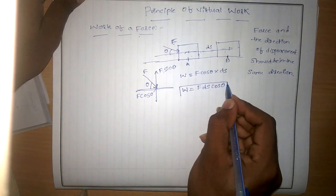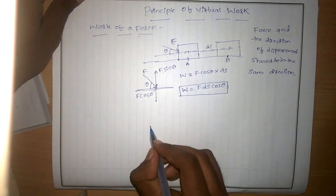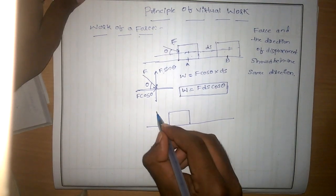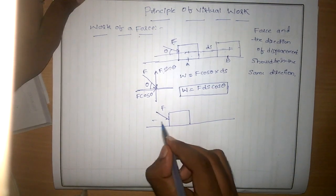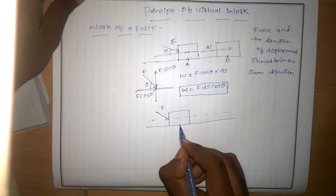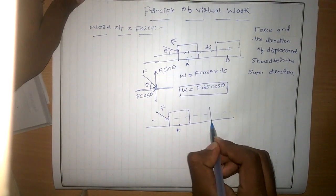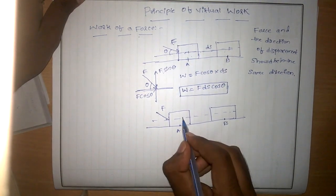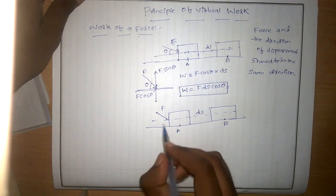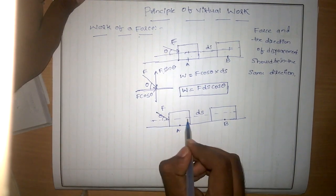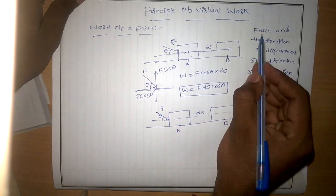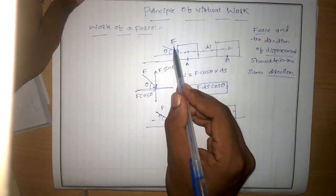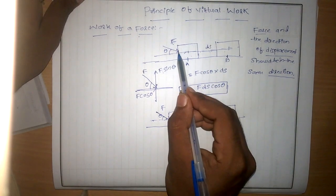We can prove it another way. The body is resting on a plane and force F is acting along x direction. Initially the body is at A; due to application of force, the body is displaced to B by a distance ds. Instead of resolving the force, we can resolve the displacement component along the direction of the force.